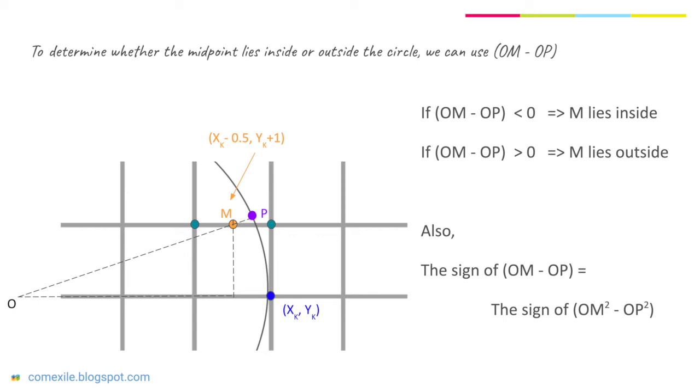Let's say O is the center of the circle, M is our midpoint, and P is a point on the circle. If (OM - OP) is negative, it would mean that M lies inside the circle. If (OM - OP) is positive, it would mean that M lies outside the circle.